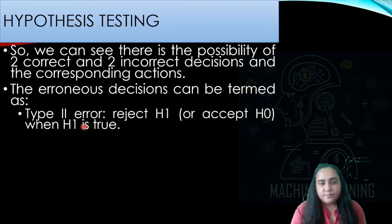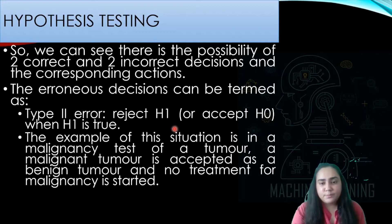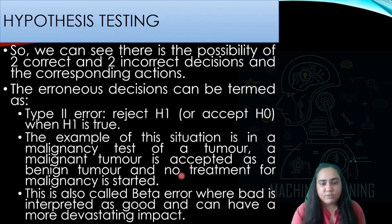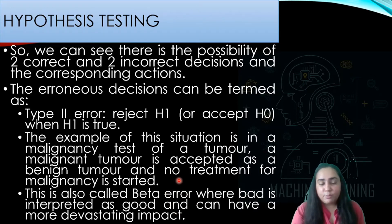The second type of error is known as Type 2 error, where you reject the alternative hypothesis and accept the null hypothesis even though H1 is true. In this example, you perform a malignancy test on a tumor, find out it is actually malignant (cancerous), yet accept it as a benign (non-cancerous) tumor and do no treatment — with potentially devastating effects. Type 2 error is also known as beta error, where bad is interpreted as good, and it has a more devastating impact than Type 1 error.